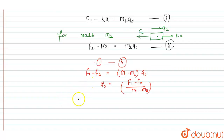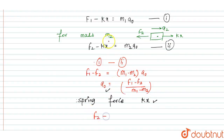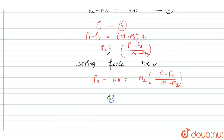We need to find the spring force, which is equal to Kx. The value of A0 is equal to F1 minus F2 upon M1 minus M2. Substituting A0 into Equation 2: F2 minus Kx equals M2 into A0, which is F1 minus F2 upon M1 minus M2.